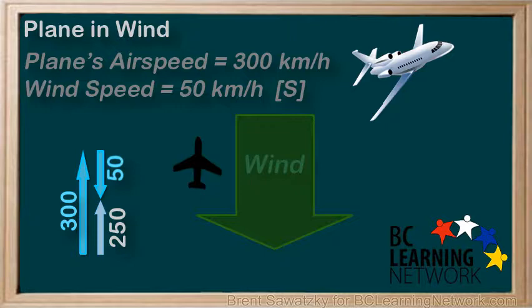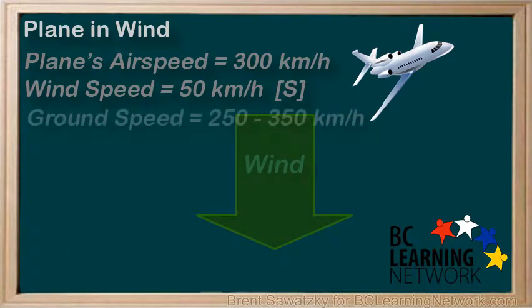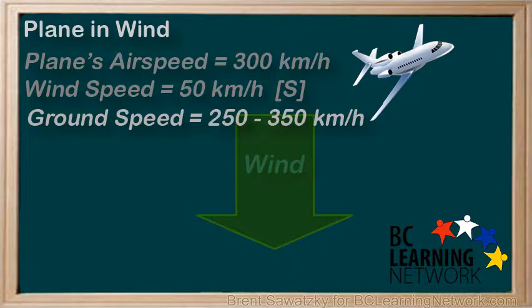So we've determined the two extremes. Depending on the direction of the plane, the resulting ground speed will vary, but will always be between 250 kilometers per hour — our minimum — and 350 kilometers per hour — our absolute maximum. The more we aim into the wind, the closer we'll be to 250 kilometers per hour. The more we aim with the wind, the closer we'll be to our 350 kilometer per hour maximum.